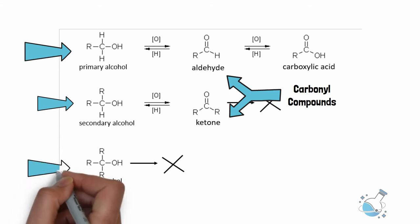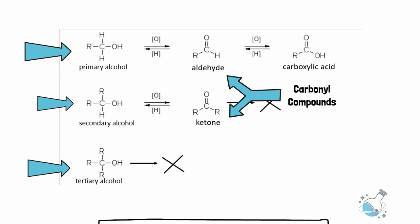Tertiary alcohol has no alpha hydrogen and as a result, it does not get oxidized. The oxidizing agents commonly used for the conversion are potassium dichromate, potassium permanganate, chromium trioxide, etc.